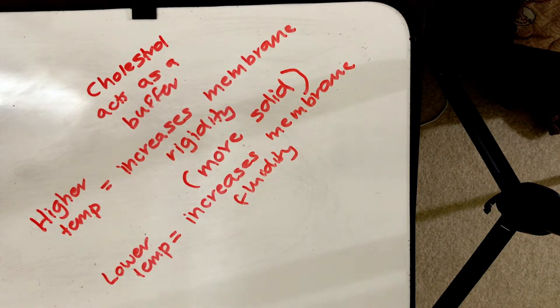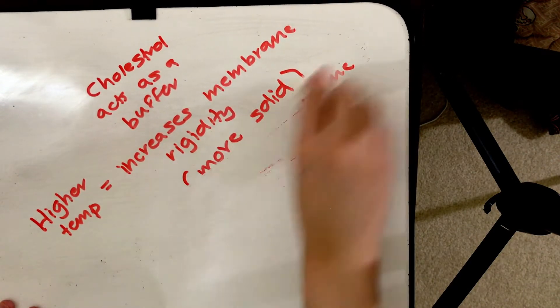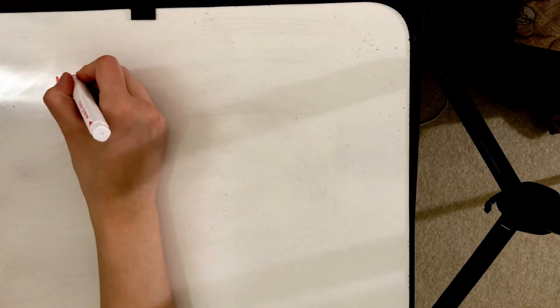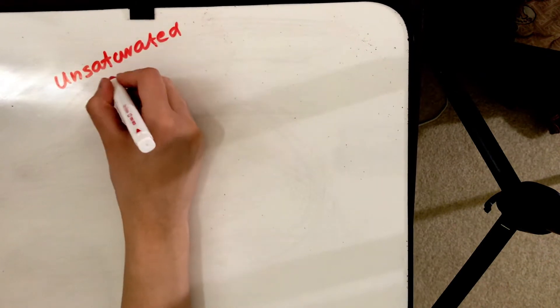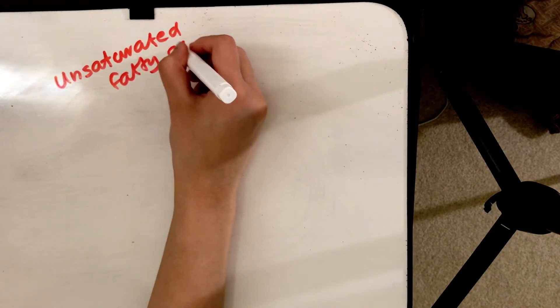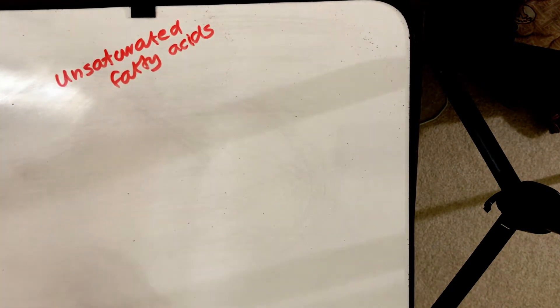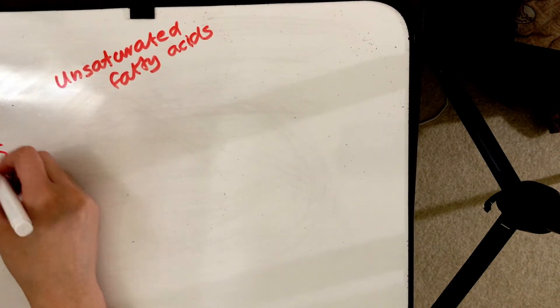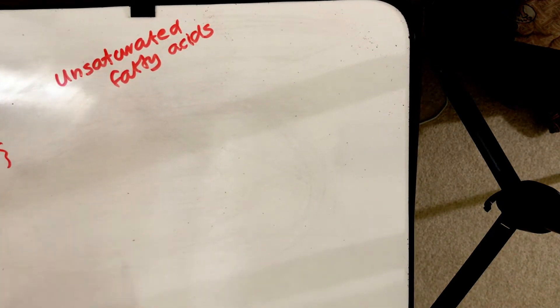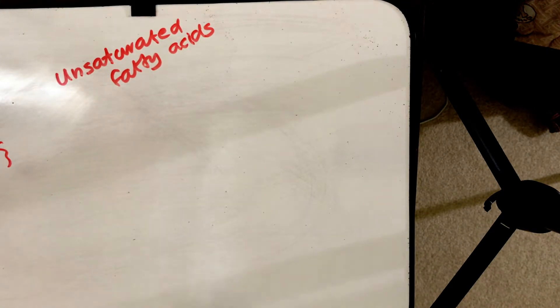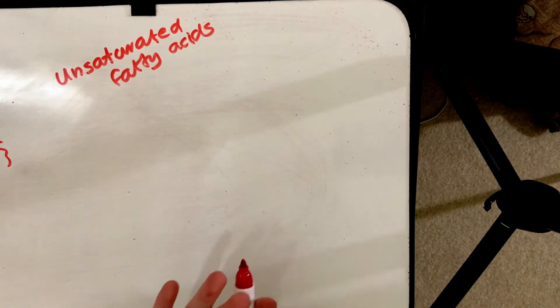Now you understand why cells might make the choice of adding cholesterol. But then, our second component that we talked about was unsaturated fatty acids. You may remember that I mentioned in the beginning of this video that our nonpolar tails are fatty acids. So what does it mean to be inserting unsaturated fatty acids?